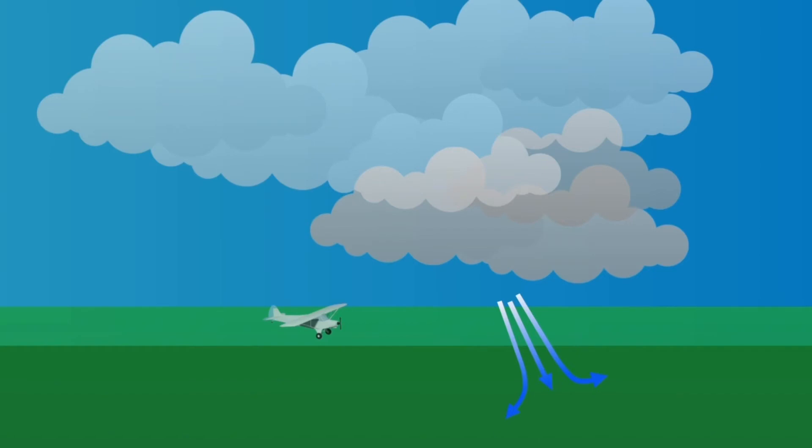But what should pilots do if they find themselves in the unfortunate situation of flying in a microburst? Since a microburst is most dangerous near the ground, let's consider an example of flying through a microburst near the ground.